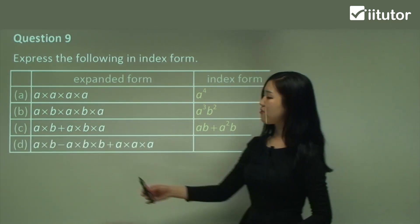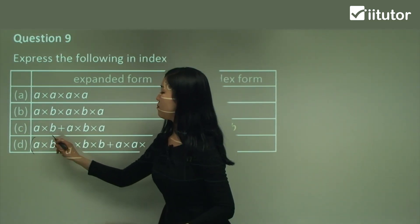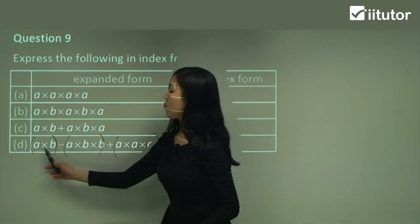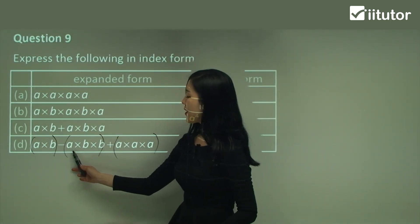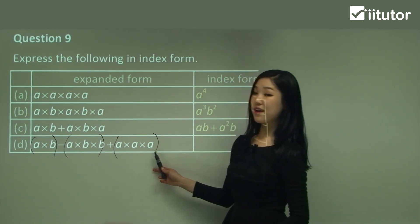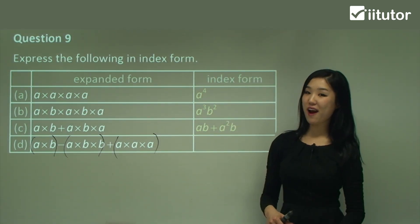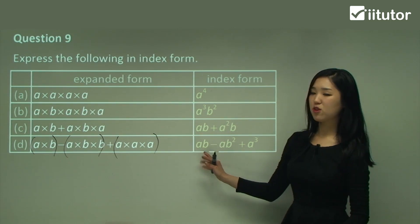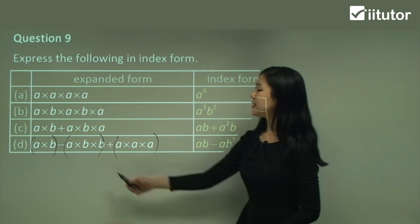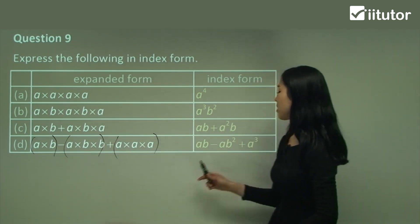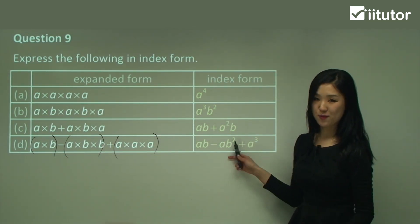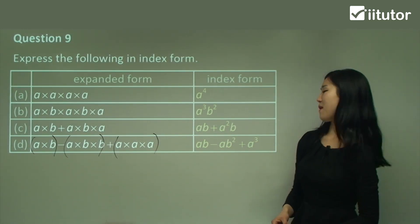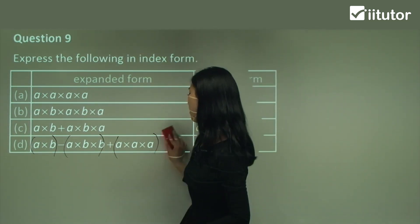Part d has a minus and a plus, so all you need to simplify are the multiplication groups. With a times b we've got 1a and 1b. Here we've got 1a and 2 b's. And here we've got 3 a's. So the answer is: a times b is just ab; 2 lots of b's and 1a gives ab squared; and 3 lots of a's gives a cubed. So it's ab − ab² + a³. It's very simple — just count how many of each pronumeral we have.